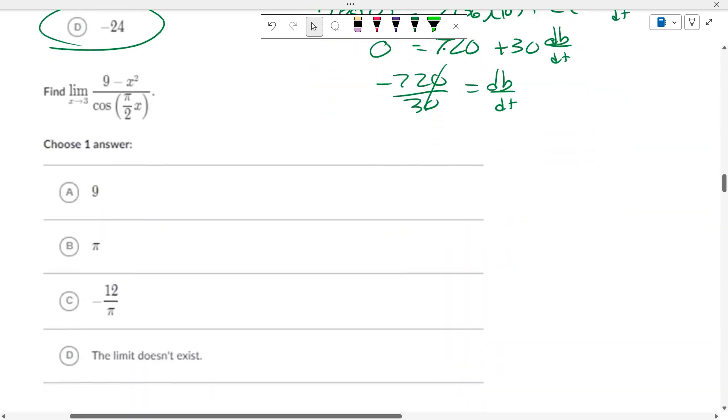Here is L'Hopital's rule. So, negative 2x over the cosine or the sine of pi over 2x times the first derivative of the inside, which is pi over 2. So, if you stick in a 3, you get negative 6 over sine of 3 pi over 2 is negative 1 times pi over 2.